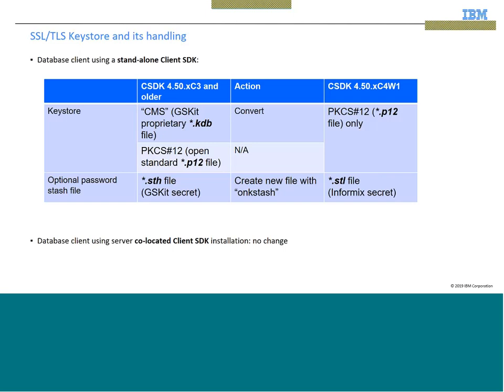With every keystore, there is an associated password file, also called a stash file. In the case of 4.50 XC3, it has the extension .sth. But when you move to client SDK 4.50 XC4W1, it will have the .stl extension. Please note that a database client using a co-located client SDK installation does not need to go through conversion. This conversion is only required for a standalone client SDK installation.